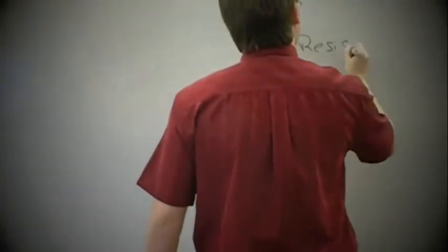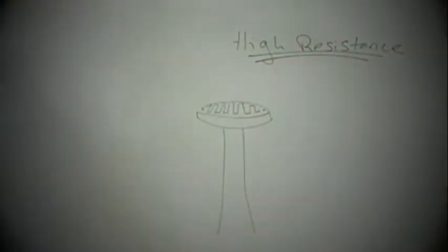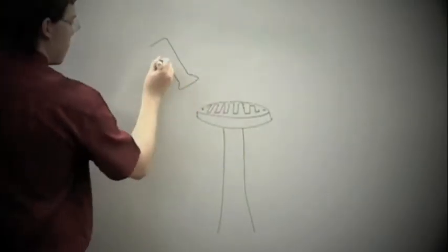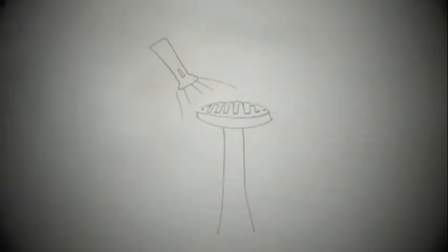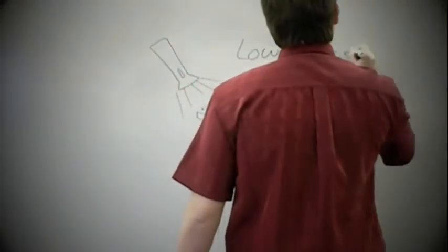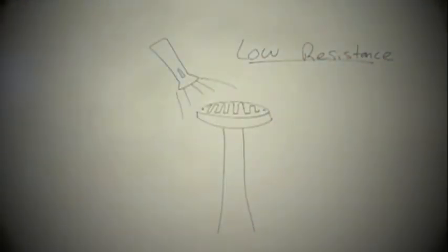Photoresistors start out with a high resistance when there's no light shining on them. If you shine a light, the resistance goes down, and if you shine enough light, the resistance goes down almost to zero, which is almost like a wire. Let's try it out.